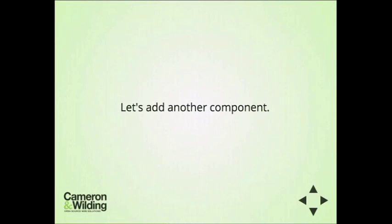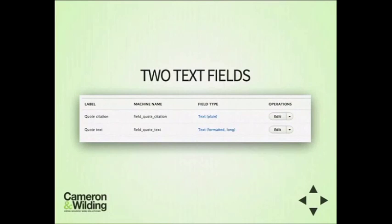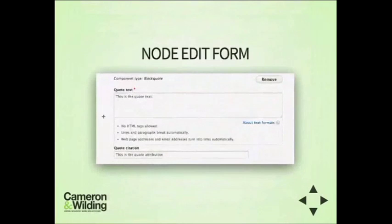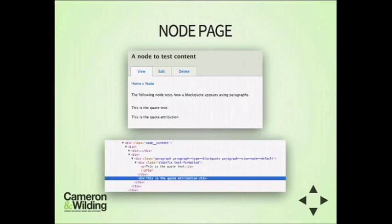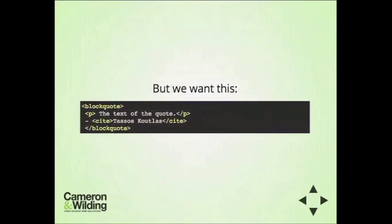To add a blockquote component, we just need two text fields: one for the quote text and one for the quote citation. But if we add content to those two fields, we end up without the proper HTML. These are, after all, text fields that Drupal places within divs and paragraph tags, with CSS applied on top. So we still didn't get the correct blockquote HTML.